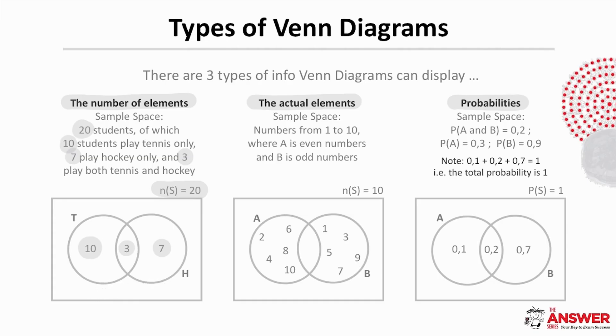Then when the information displayed is the elements themselves, in this sample space we have the first 10 natural numbers displayed where A is the even numbers and B the odd numbers. You may notice that the overlap is empty. We will say more about this in a bit.